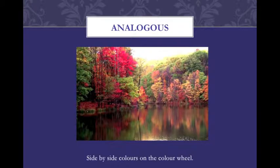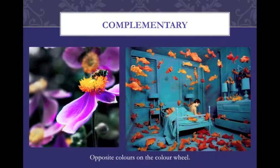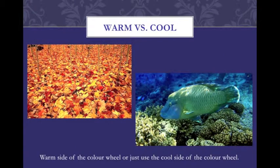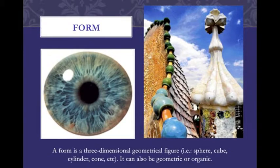Colors can be complementary, where opposite colors are on opposite sides of the color wheel. They can also be warm colors such as reds, or cool colors such as blues. Form is a three-dimensional geometrical figure — it can be a sphere, cube, cylinder, cone, etc., and can be geometric or organic.